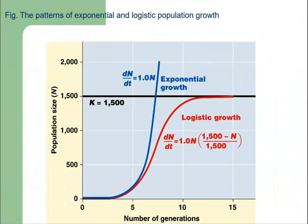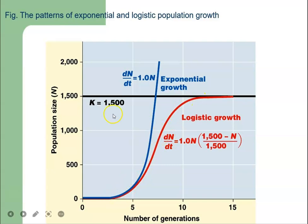These are the patterns of exponential and logistic population growth. When r is greater than 0, according to the exponential growth model, the population size increases and the rate of change is very high. If it grows along the logistic growth curve, the growth takes an S-shape. In both cases shown, the carrying capacity is 1,500.